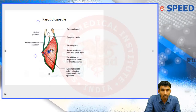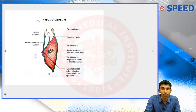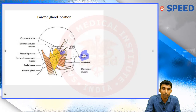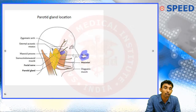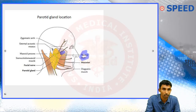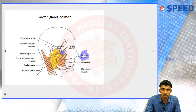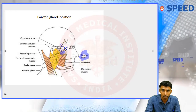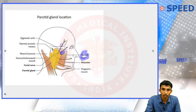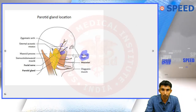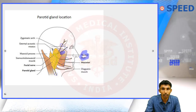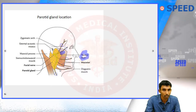After entering the parotid gland, the facial nerve divides into five terminal branches, as seen in this diagram. All five terminal branches supply the muscles of facial expression. From above downwards, the five branches are: temporal, zygomatic, buccal, marginal mandibular, and the cervical branch of the facial nerve.